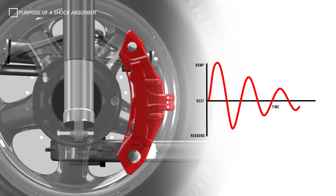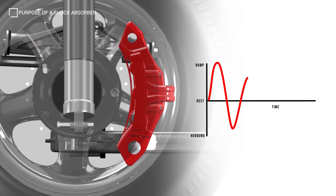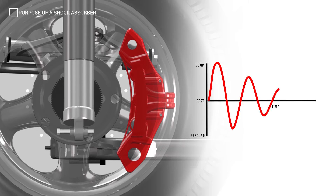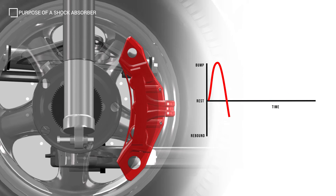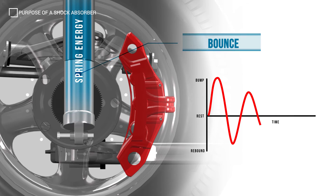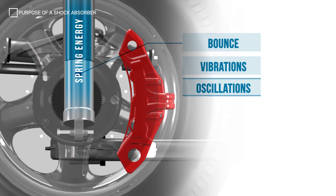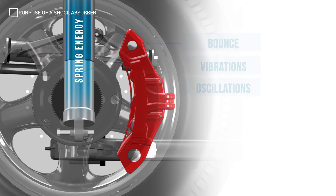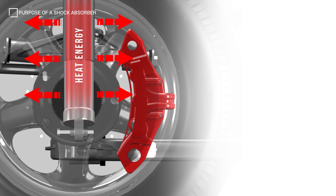When attached to a suspension system, the shock absorber uses hydraulic principles to create a dampening effect for the control of bounce, vibrations and spring oscillations. The shock then converts the spring energy into heat energy, which is then dissipated to the air.